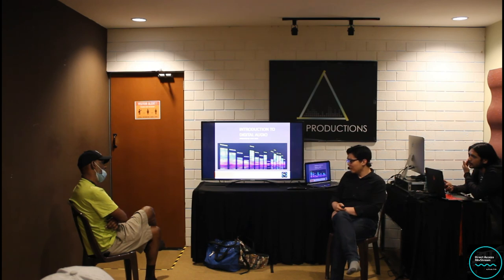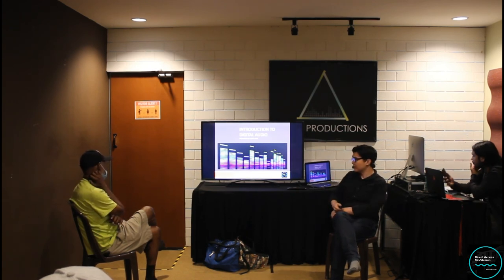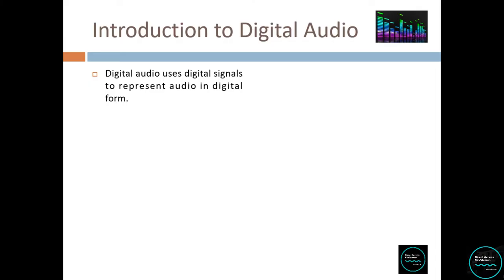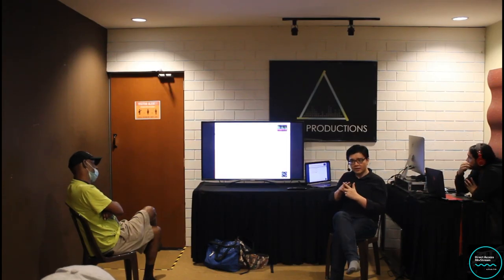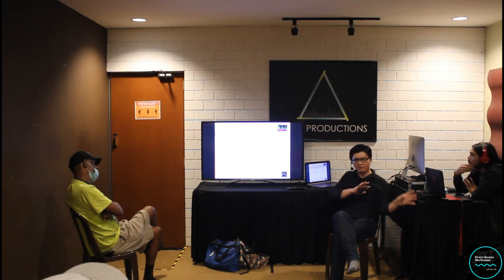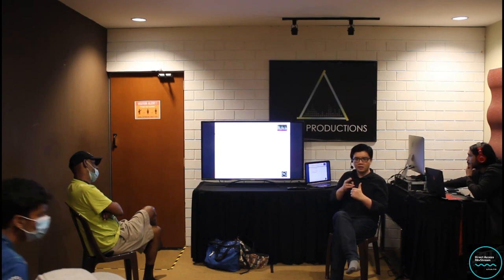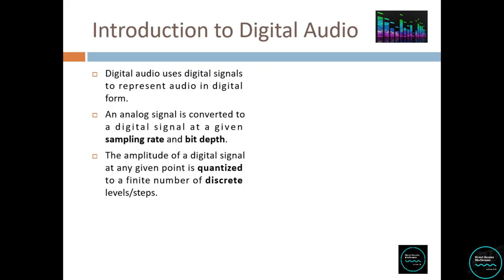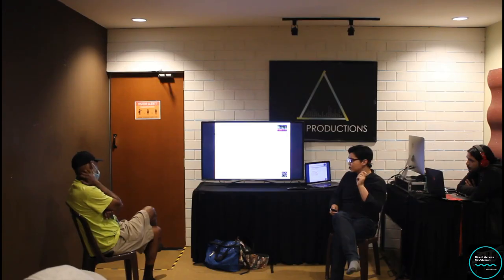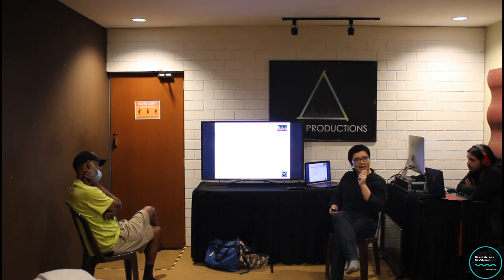Let's go into digital audio. As the name implies, digital audio uses digital signals to represent audio in digital form. An analog signal — say traveling through a mic cable from a microphone — is converted to a digital signal at a given sampling rate and bit depth. These are the two things you really need to know. Whenever you're handling or sending files, you need to know what sampling rate your project is working in and what the bit depth is.